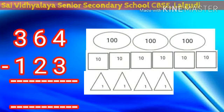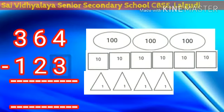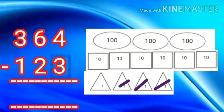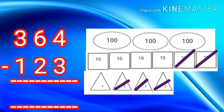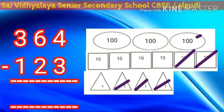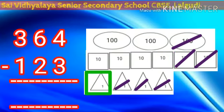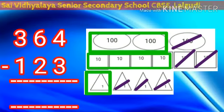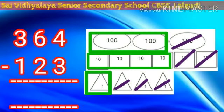Now we will remove 123 from 364. Here we have three ones — let's strike off three one cards. And two tens — let's strike off two ten cards. We have one in the hundreds place, so strike off one hundred card. Now we are left with one one card, four ten cards, and two hundred cards. We got 364 minus 123 equals 241.